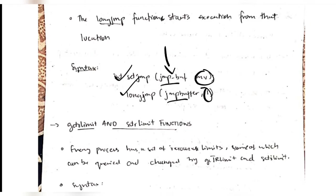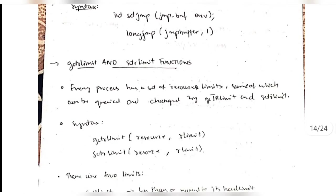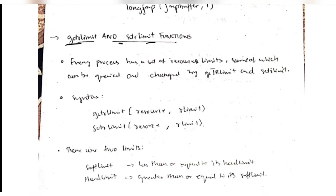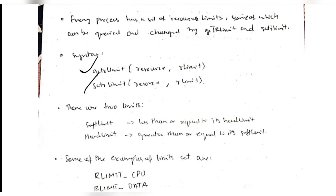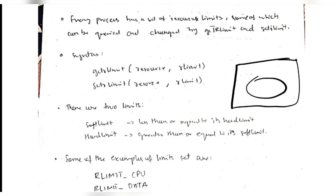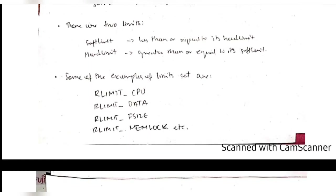The syntax of setjmp and longjmp has parameters: the jump buffer and the environment variables. The jump buffer holds data about which part of the program you are jumping to, and the environment variable holds the data to be processed. Since resources are not unlimited, we set limits for each resource using 'getrlimit' and 'setrlimit'. There are two types of limits: the hard limit, which is the outer limit, and the soft limit, which is the inner limit. Examples of resources include CPU, data, file size, and memory.